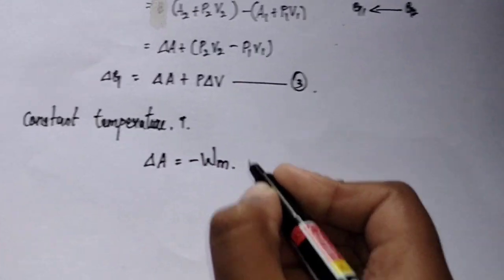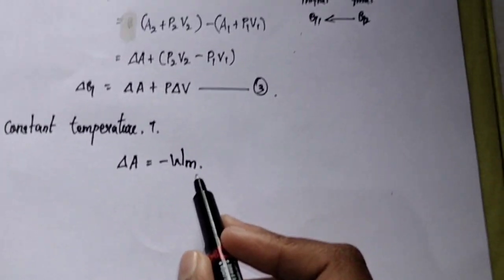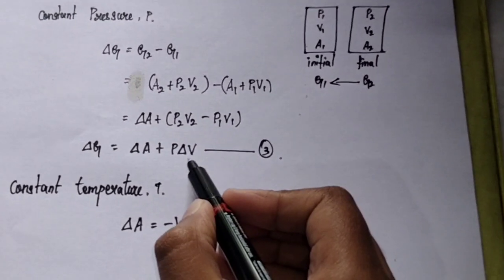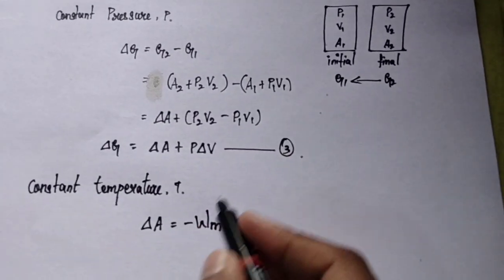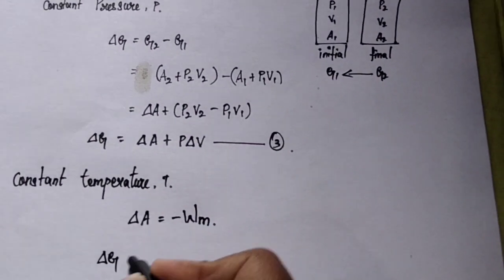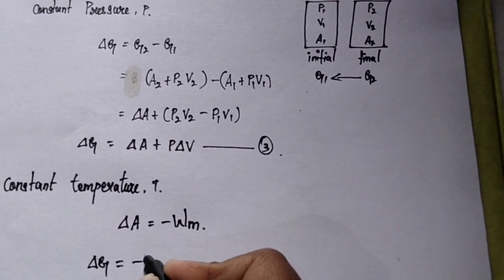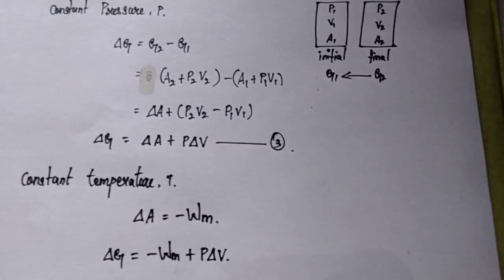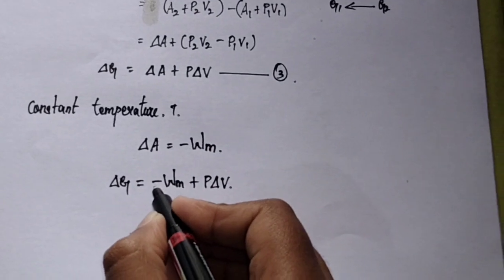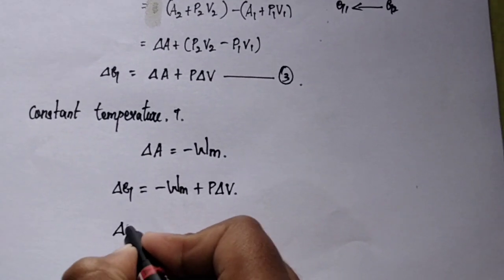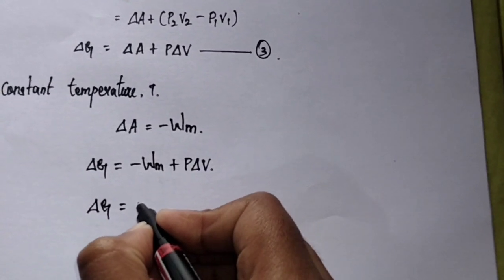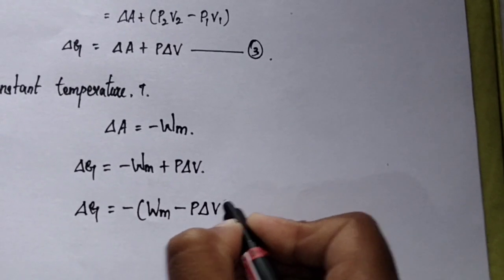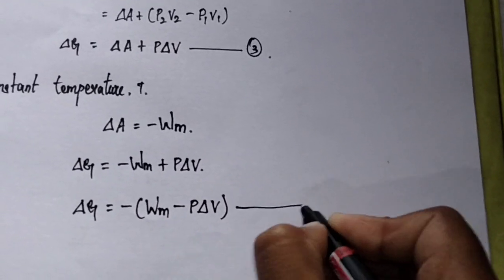At constant temperature T, we know ΔA equals minus WM, where WM is the maximum work obtainable. Substituting this in equation number three, we get ΔG equals minus WM plus PΔV. Taking minus out commonly, we get ΔG equals minus of (WM minus PΔV). Take this as equation number four.